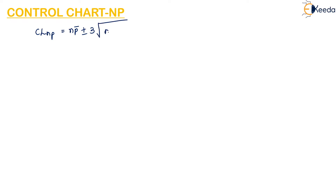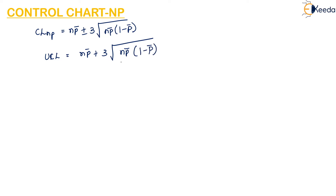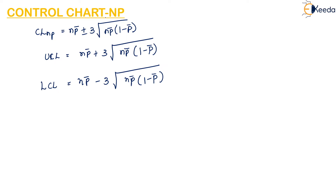The control limits for the NP chart are given as NP-bar plus or minus 3 times the square root of NP-bar into (1 minus P-bar). So the upper control limit is NP-bar plus 3 root of NP-bar into (1 minus P-bar). If you divide this by the number of samples it gives the upper control limit for the P chart, but here we consider the number of defectives — not the fraction defective — so the factor n is completely omitted. This is how we calculate the control limits for the NP chart.